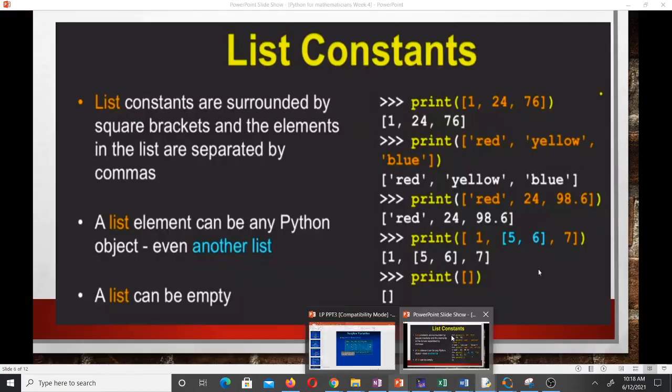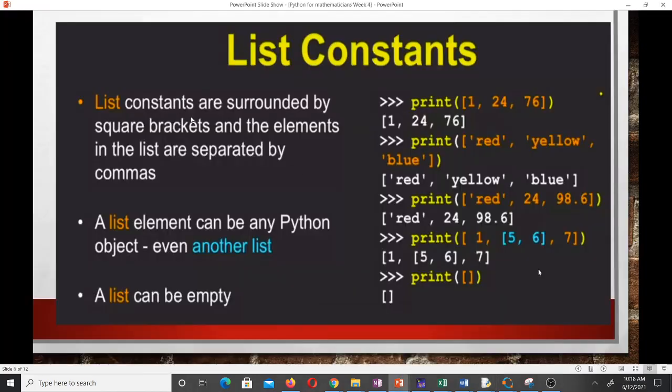List constants are surrounded by square brackets and the elements in the list are separated by commas. Here we have a list containing 1, 24 and 76, or red, yellow, blue. These are examples of lists we are printing. A list element can be any Python object, even another list. So we can store a list in another list. You can see this example we had 1, another list 5, 6, then we had 7. And the list can be empty. An empty list is just you open the square brackets and close it. That's it with a list.